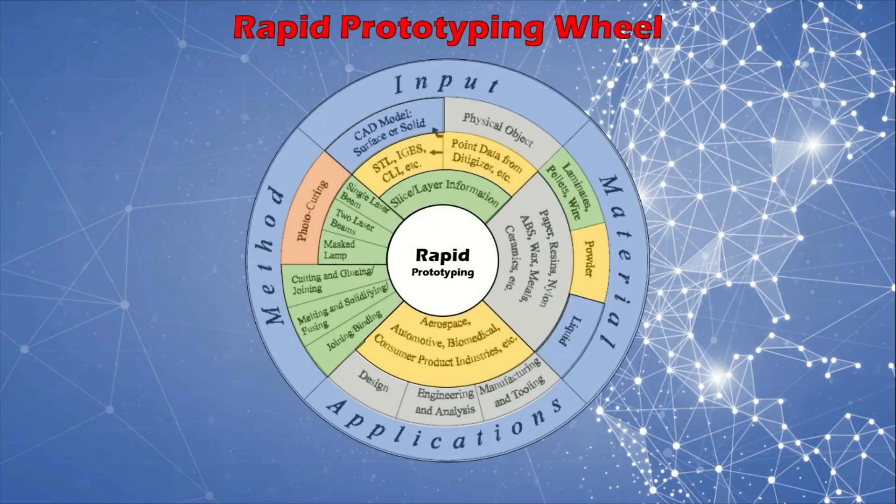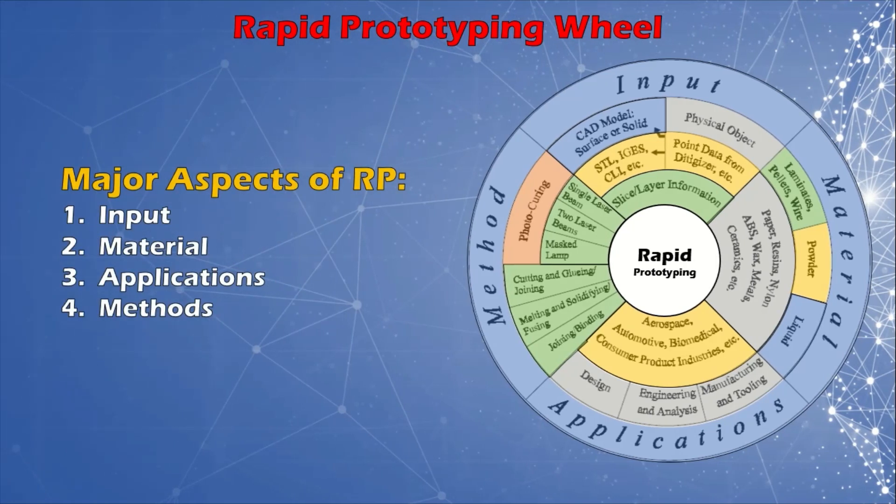The development of RP can be seen in four primary areas. The rapid prototyping wheel depicts these four key aspects of rapid prototyping. They are input, method, material, and applications.